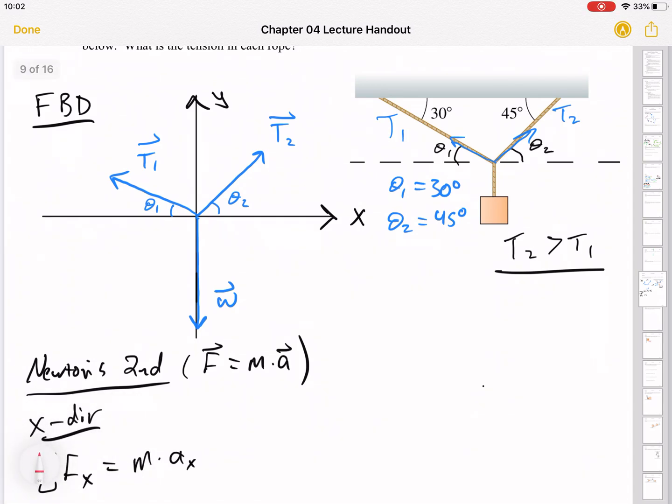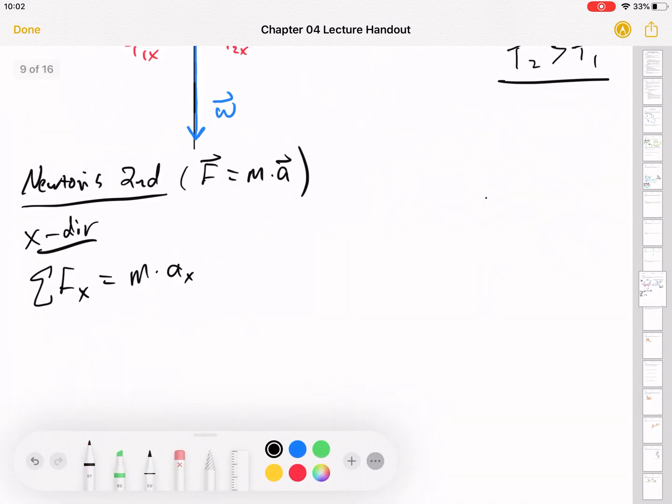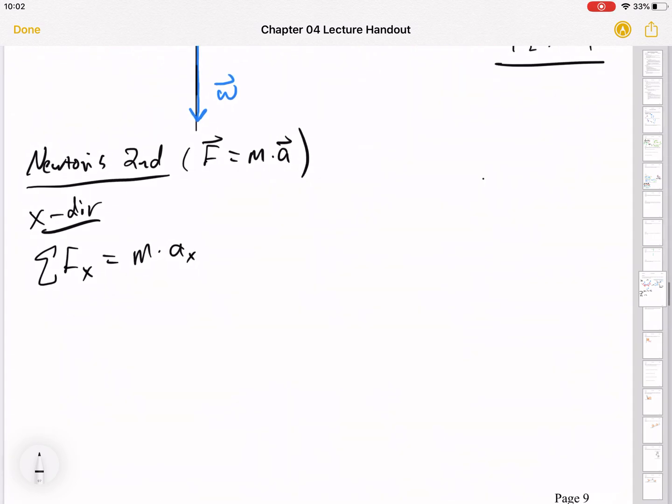So what are the X direction forces? I go back to my free body diagram. I see weight is down, which is not right or left at all, but T1 and T2 are partially right or left and partially up and down. T1 is left and up, T2 is right and up. So I need to break those into components. So I'm just going to do that directly on the diagram. So here's T2X and T2Y, and here is T1X and T1Y. So I've got T2X is to the right, so I'm going to start with that, and then T1X is to the left equals M times A sub X.